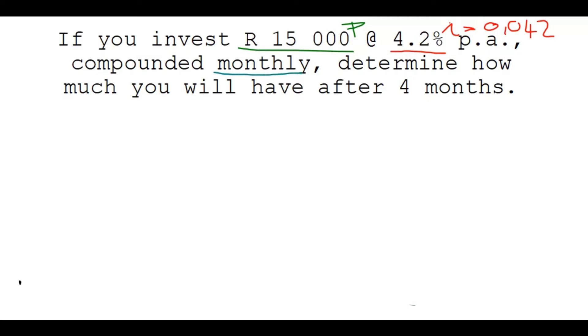Compounded monthly, so that tells me now I have a frequency, and the frequency is 12. Determine how much you will have after 4 months. So this is your time. Now since it's not a bunch of years, it's just 4 months, and it's compounded monthly, so every month interest is calculated, which tells me the number of times will just be 4 times. There's no years involved or anything here. Now what we're going to do, and you must compare this to the next section, we're going to do the long method.